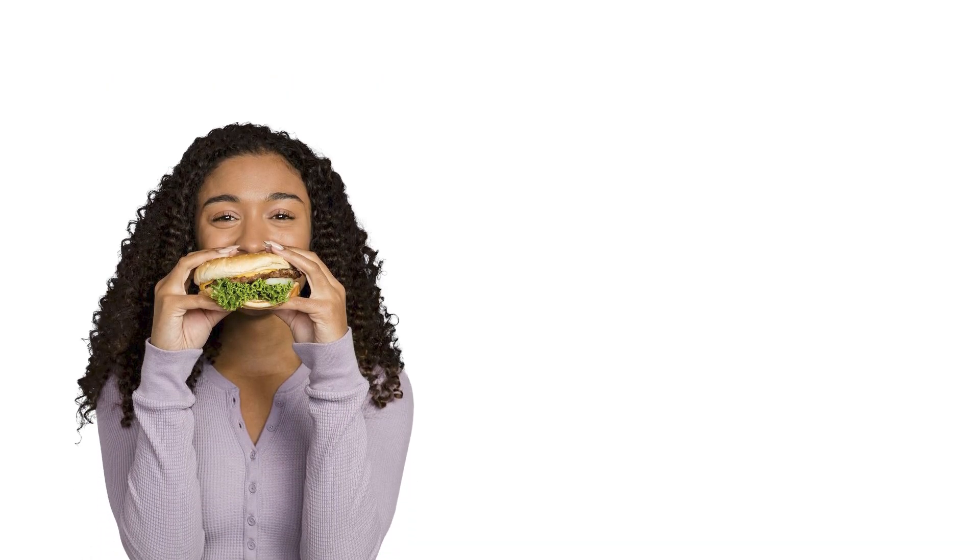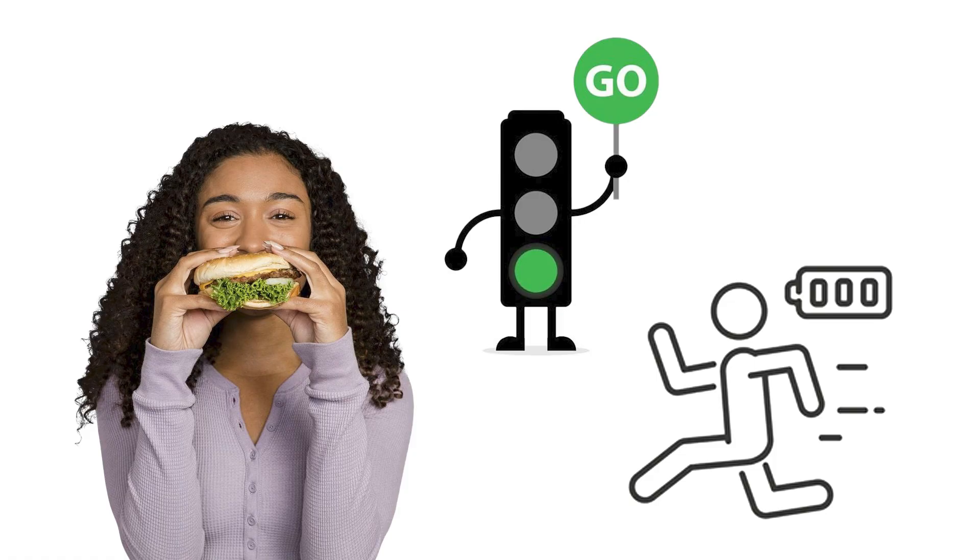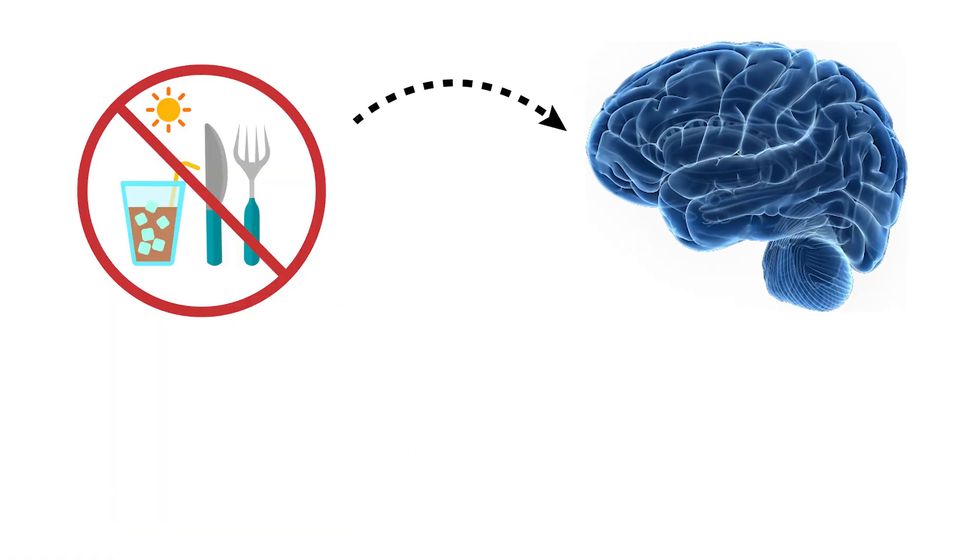When you eat all the time, this system never gets the green light to run at full power, but fasting sends the signal that it's time to clean house.